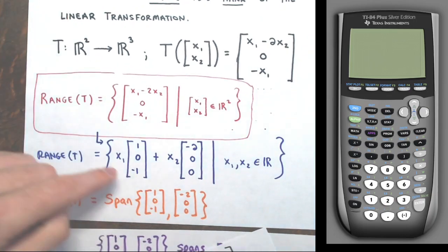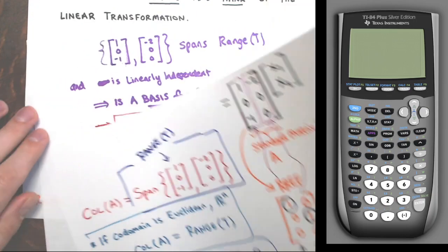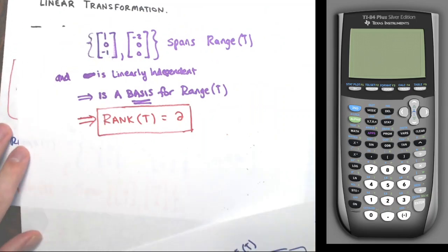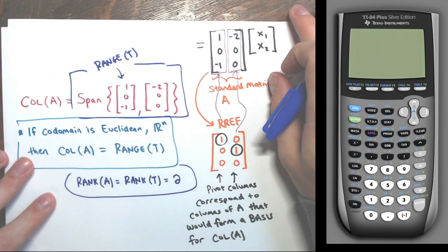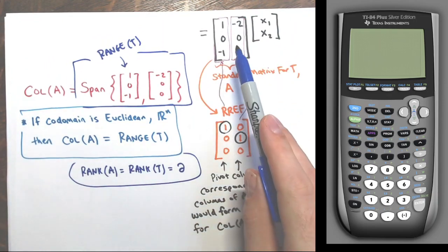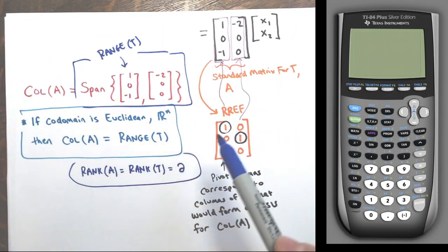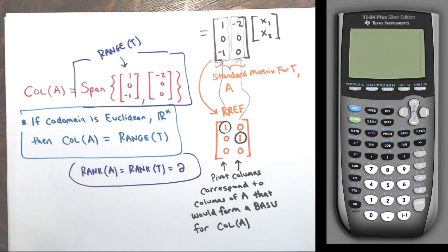So both approaches give the same result: the same span for the range and the same rank of 2. Finding a basis via the standard matrix and column space is generally easier since you've had practice finding the rank of a matrix, and then you can state the range and rank of the transformation.